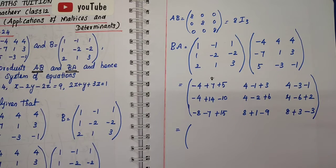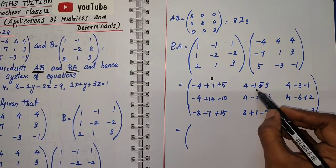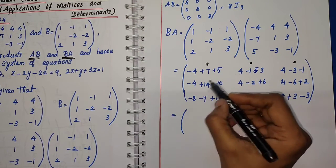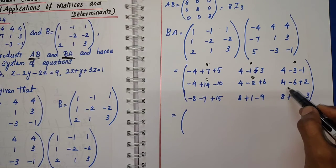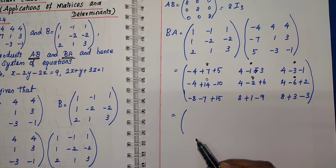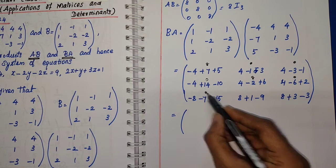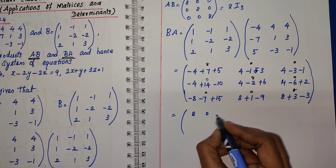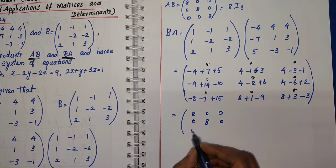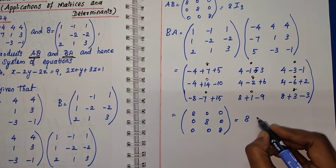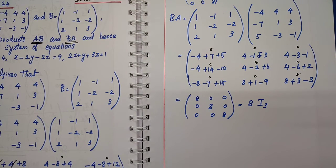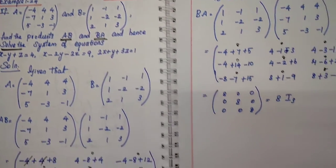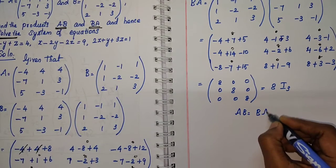Continuing simplification: 1 into minus 3 is minus 3, plus 4 minus 1 is minus 3 minus 4 giving 0; plus 4 minus 4 is 0; minus 4 minus 10 minus 14 plus 14 is 0; and 6 plus 4 is 10 minus 2 is 8; 4 minus 4 plus 2 is 6 minus 6 is 0; minus 8 minus 7 minus 15 plus 15 is 0. So BA equals 8, 0, 0, 0, 8, 0, 0, 0, 8 — which is 8I₃. Therefore AB equals BA equals 8I₃.